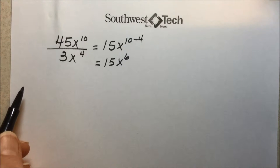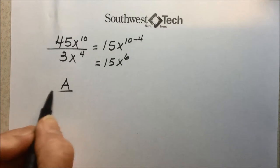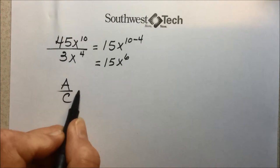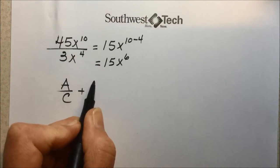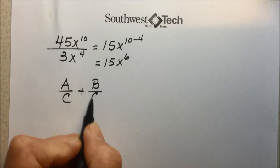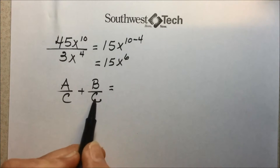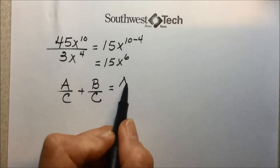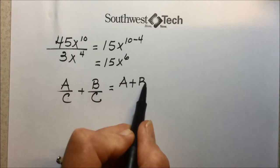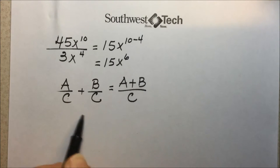To divide a polynomial by a monomial, we regard the division as a sum of quotients of monomials. This uses the fact that to add rational expressions together, we have to have a common denominator. To simplify, we have the addition of the numerators over the common denominator.